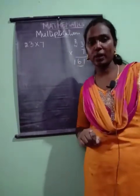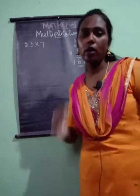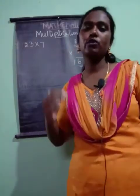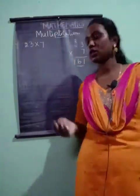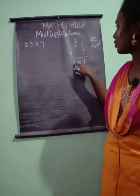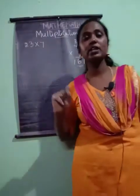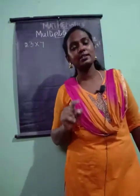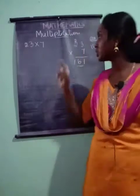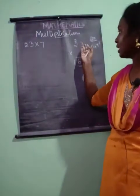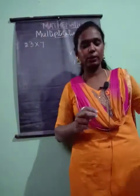So 23 into 7 is 161. Always follow a step-by-step process. If you do seven twos first and then seven threes, your answer will be wrong. Always start multiplication from the ones place.